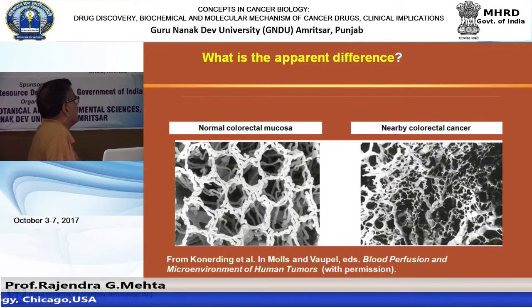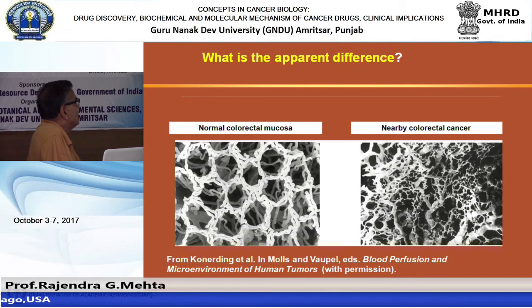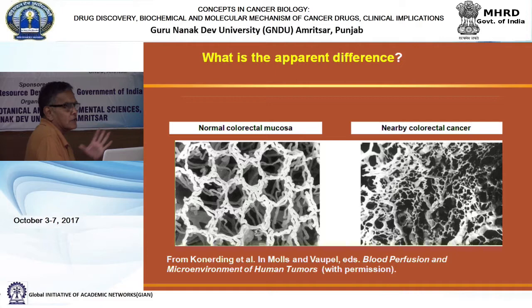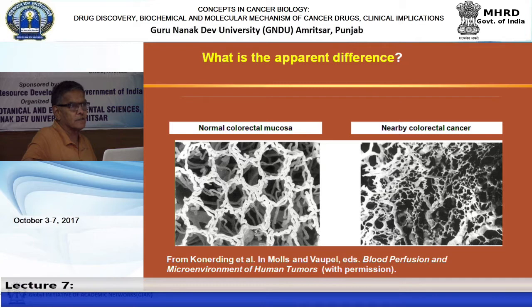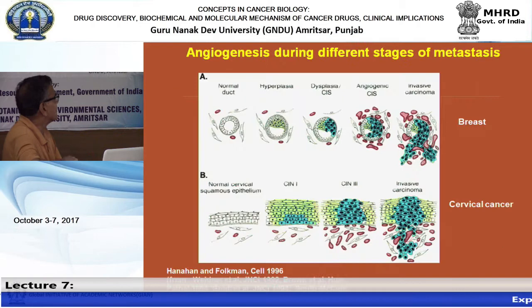Looking at normal colorectal tissue, you see a well-organized pattern with orderly blood vessels. In colon cancer, you can see newly formed ducts all over the place due to heavy angiogenesis. The reason angiogenesis is needed is because tumor cells need more supplies than regular cells, and those supplies come from blood - more blood vessels mean more nutrients.